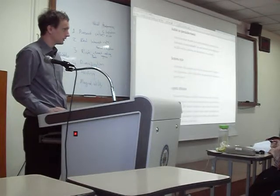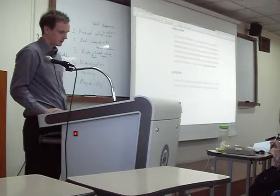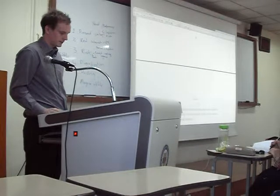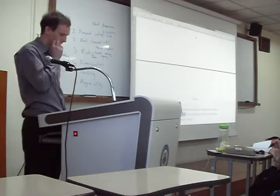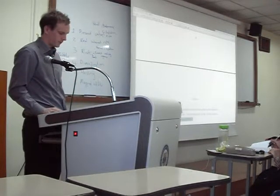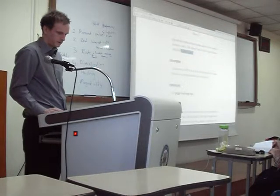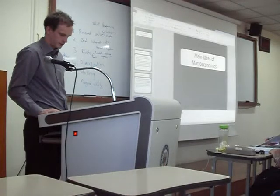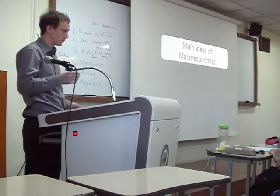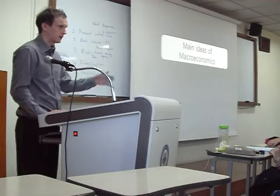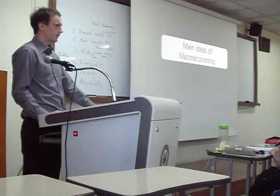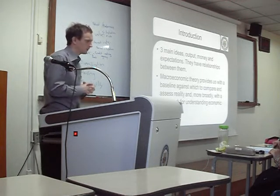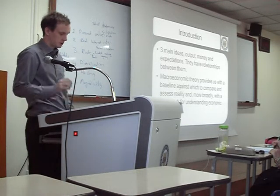A central bank is an institution that controls a nation's monetary policy. The central bank in the US is called the Federal Reserve. So let's begin to discuss macroeconomics. There are three main ideas: output, money, and expectations. They all have a relationship between them.